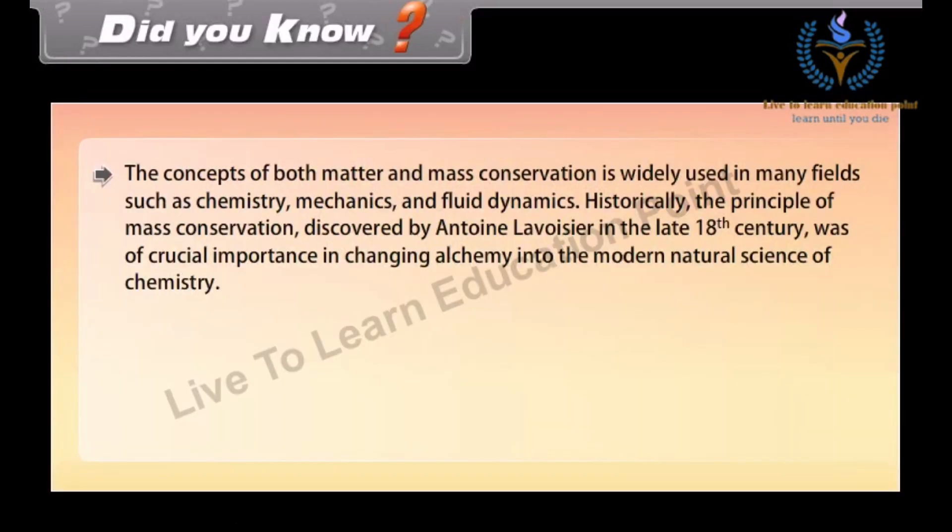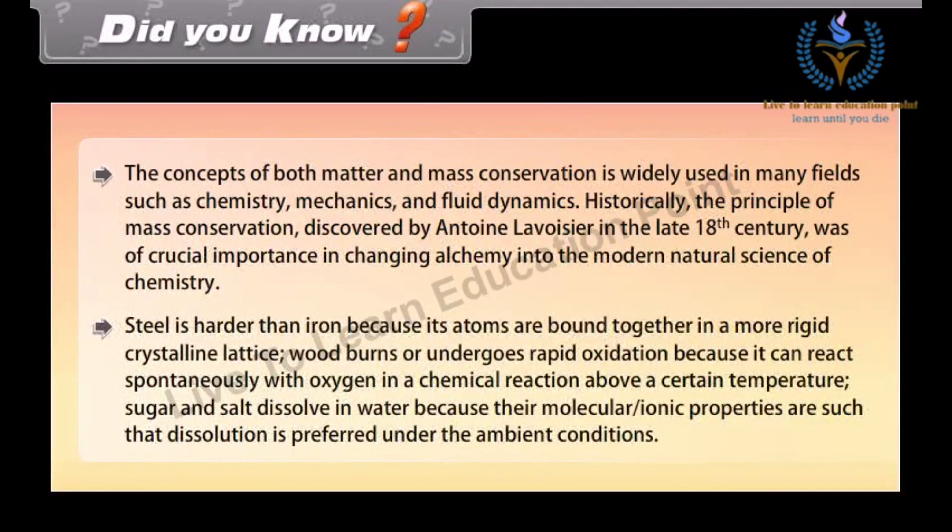Mass conservation is widely used in many fields such as chemistry, mechanics, and fluid dynamics. Historically, the principle of mass conservation discovered by Antoine Lavoisier in the late 18th century was of crucial importance in changing alchemy into the modern natural science of chemistry. Steel is harder than iron because its atoms are bound together in a more rigid crystalline lattice. Wood burns or undergoes rapid oxidation because it can react spontaneously with oxygen in a chemical reaction above a certain temperature. Sugar and salt dissolve in water because their molecular ionic properties are such that dissolution is preferred under the ambient conditions.